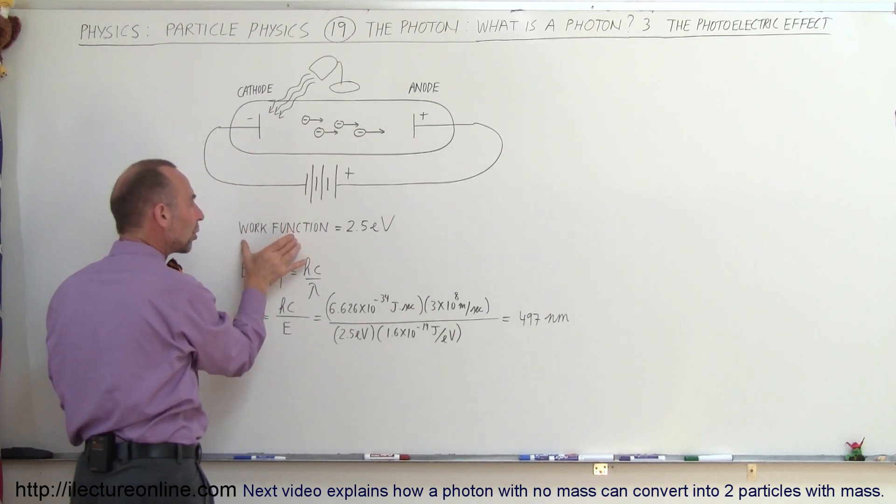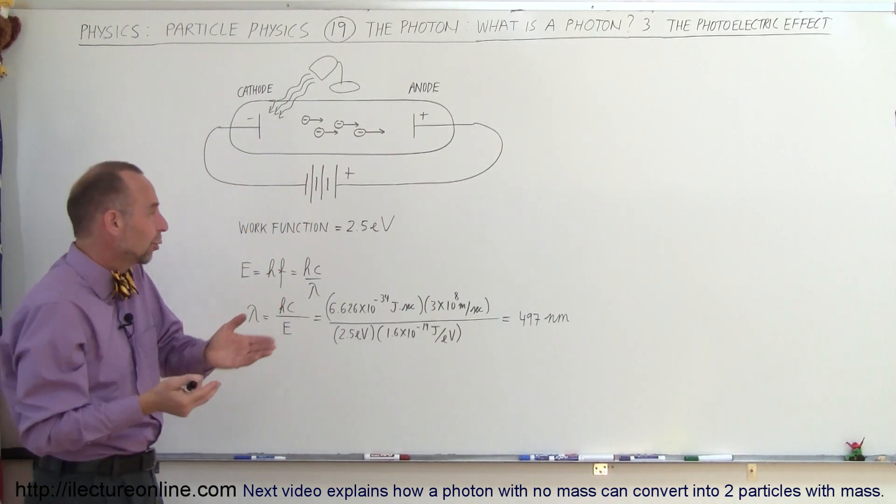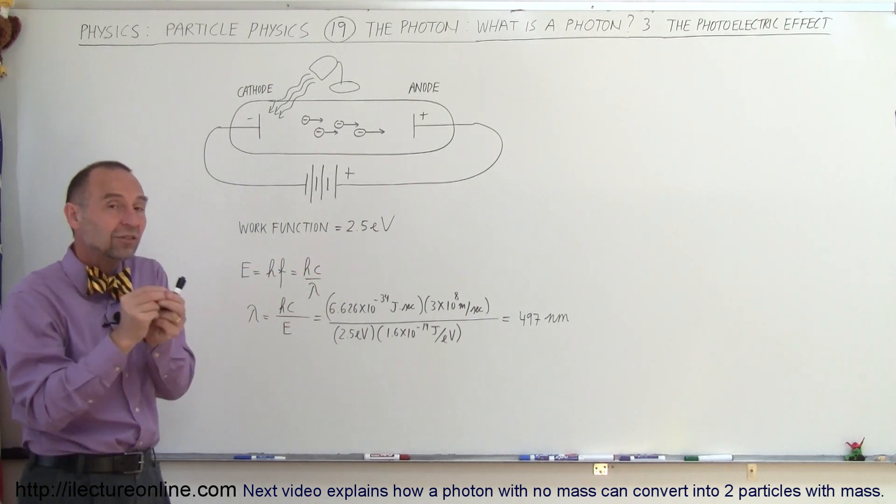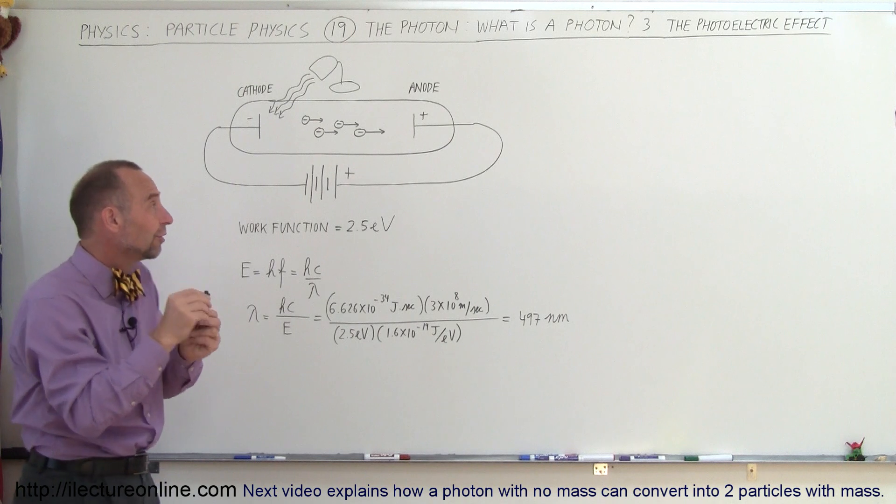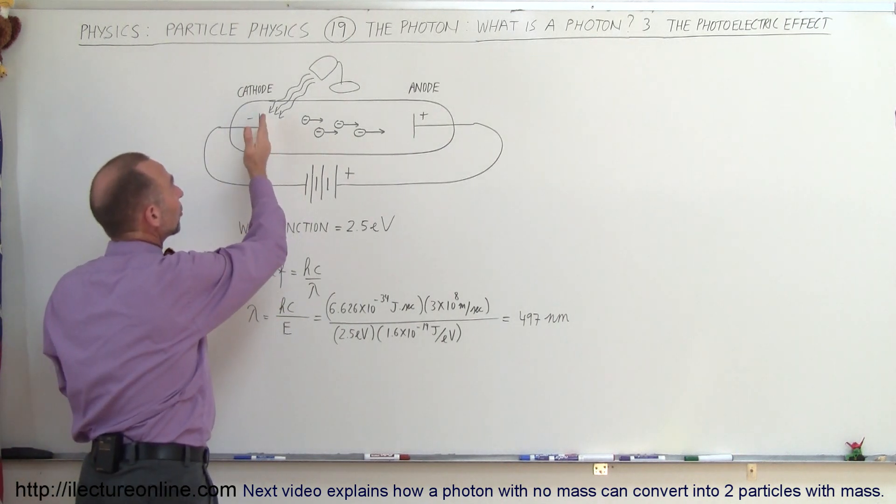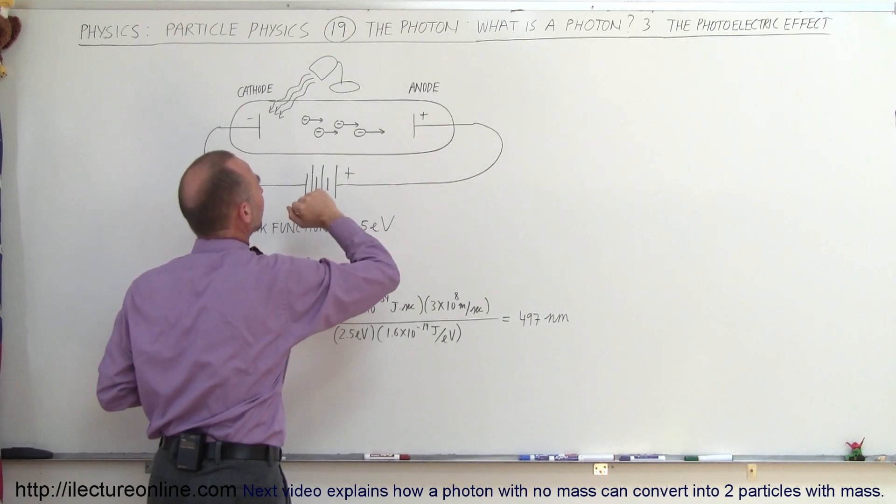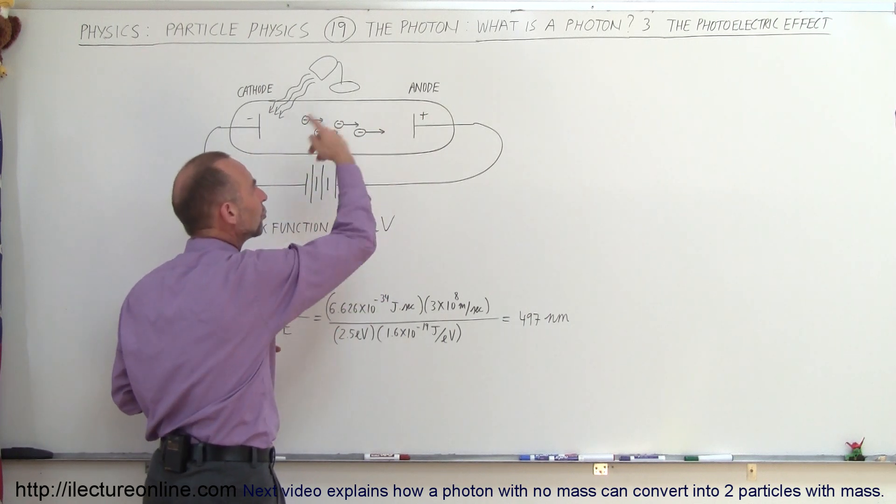and for a typical metal the work function would be about 2.5 electron volts, which means each electron would have to be given 2.5 electron volts worth of energy to jump free from the cathode, and then the electric field would zip the electrons across to the positive anode over here, causing a current to flow.